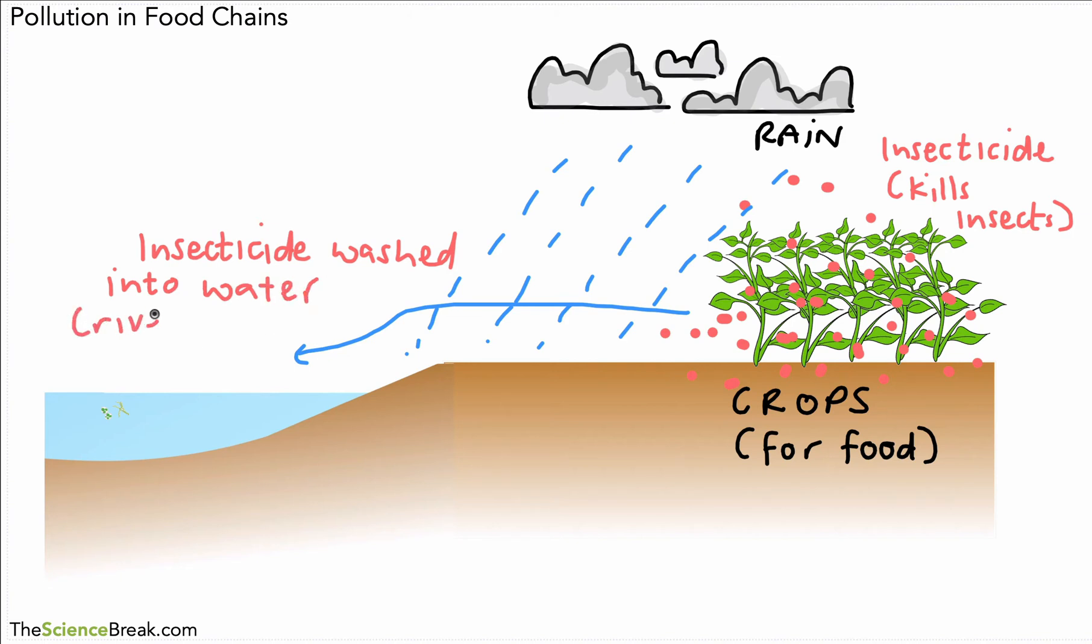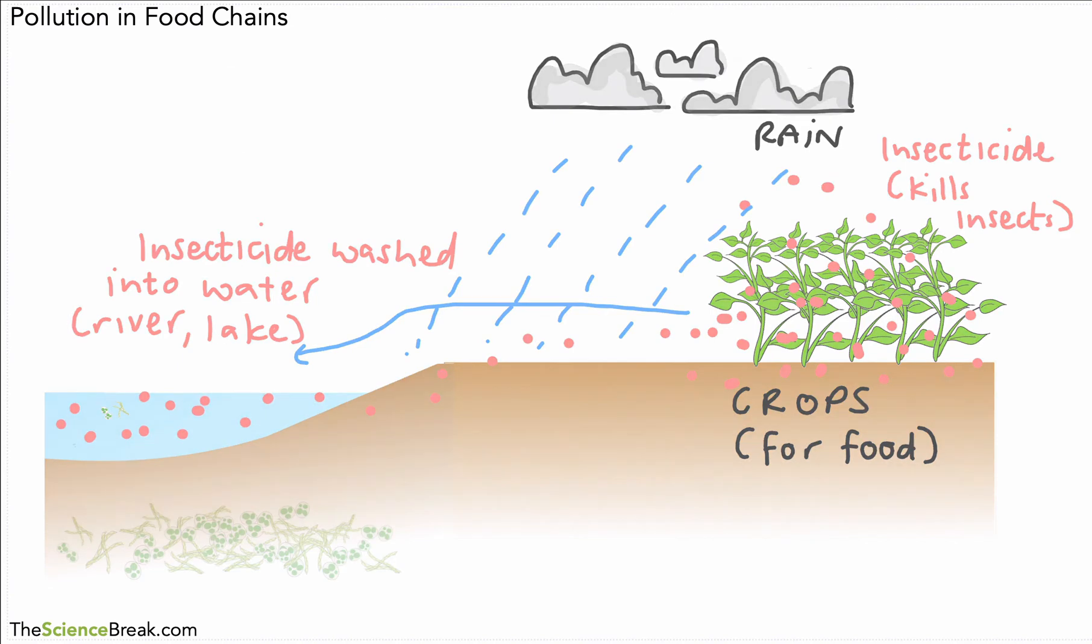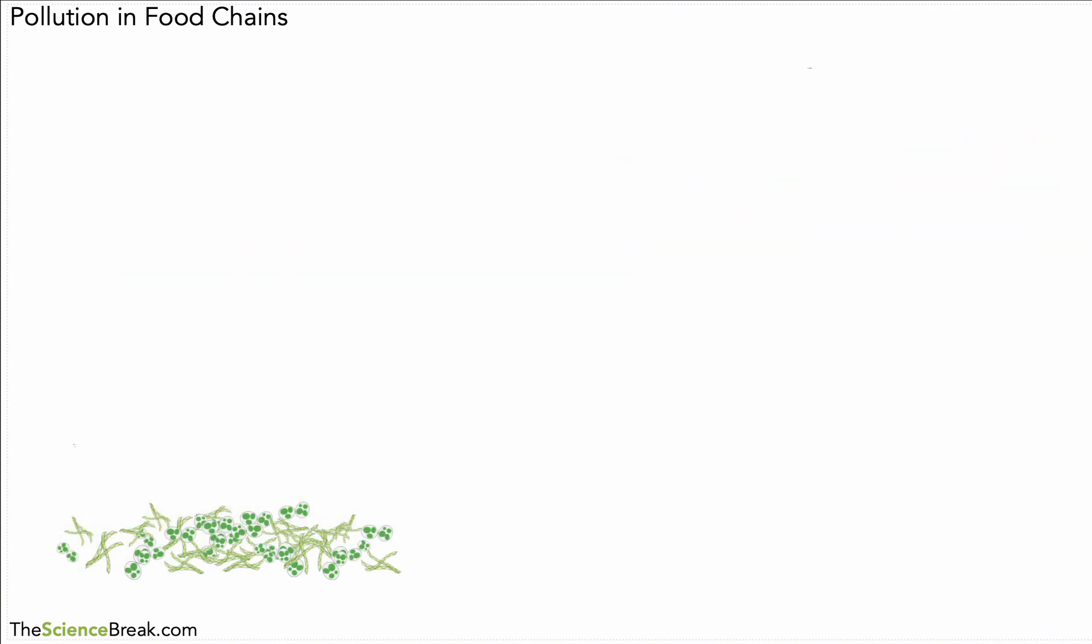So the insecticide is washed into water. This could be either rivers, lakes or even the ocean. So there it goes off into the waterway, the river or the lake there. Now what could possibly happen there? Well let's take a look and see.